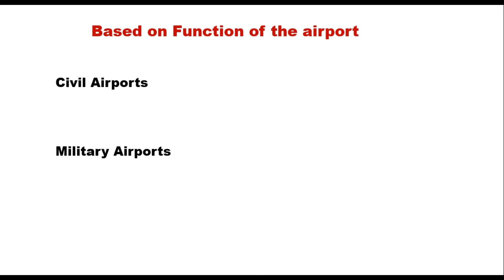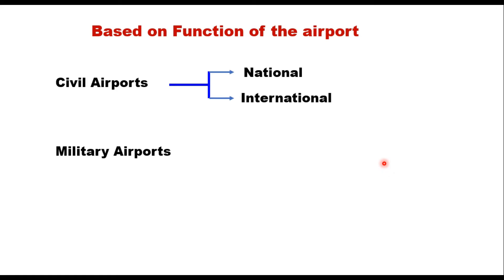The next classification is based on the function of the airport. Airports can be classified as civil airports or military airports. Civil airports are those used for non-military operations and can be either national or international. A domestic airport handles flights within the same country and does not require customs and immigration facilities. International airports transport passengers from one country to another and therefore have customs and immigration facilities. Military airports are for use by military aircraft, enabling air warfare.